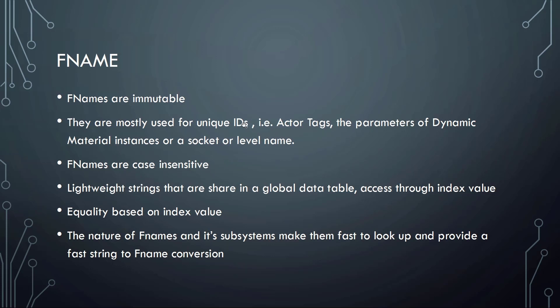Thus they're really used for unique IDs, names and so on in the game framework. They are lightweight strings that share a global data table and are accessed through index value. Once you create a name, it's added to a global data table, and the equality is based on that index value. Basically it's like a hash table, and the nature of FNames and its subsystems make them really fast to look up and provide fast string to FName conversion.